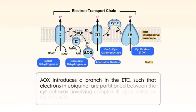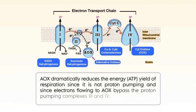A defining feature of the plant mitochondrial electron transport chain is the presence of two terminal oxidases. In addition to cytochrome oxidase or COX, an alternative oxidase, AOX, is present that directly couples the oxidation of ubiquinone with the reduction of molecular oxygen to water. AOX introduces a branch in the electron transport chain, such that electrons in ubiquinol are partitioned between the cytochrome pathway involving Complex 3, cytochrome C, and Complex 4, and AOX. Notably, AOX dramatically reduces the energy yield of respiration in terms of ATP since it is not proton pumping, and since electrons flowing to AOX bypass the proton pumping complexes 3 and 4.